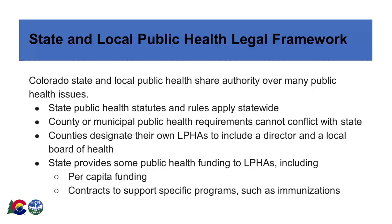Now that we have a good understanding of the structure of government in Colorado, we will dig into how public health functions at the state and local level. Colorado state and local government public health have shared responsibility, known as concurrent jurisdiction, for many public health issues. State public health laws and rules apply statewide, and any additional county or municipal public health requirements must be at least as stringent as and cannot conflict with the state requirements. State law requires counties to create a county or district public health agency, select their own public health director, and appoint a local board of health. The state also provides some funding to LPHAs, including per capita funding required by state law, and some individual contracts to support specific program work, such as immunizations. Typically, state funds do not cover all public health program or administrative costs.